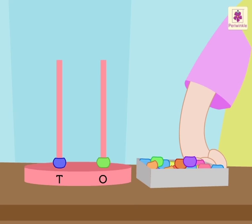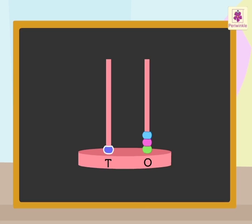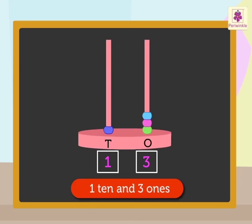Let us help Simi to read numbers using abacus. Look, there is one bead in the tens rod and three beads in the ones rod. One bead in the tens rod means one ten. Three beads in the ones rod mean three ones. So, the number is 13, that is one ten and three ones.